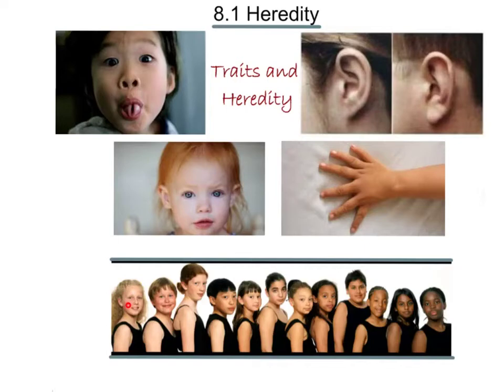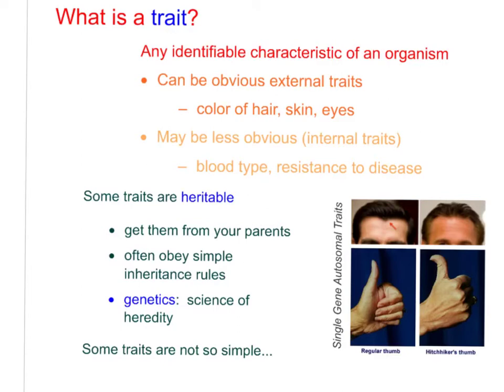Some things are not inherited, and we're going to be talking about both of those. What is a trait? A trait is any identifiable characteristic of an organism. Traits could be external, like the color of your skin, hair, or eyes, or they might be less obvious — something inside of you, like the type of blood that you have, or if you are resistant to certain kinds of diseases. Those aren't external; they're internal, but they are also traits.